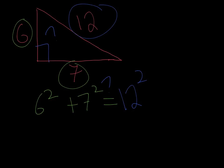If this is true, if it is equal, then it's a right triangle. If it's not, then it's not a right triangle. Simple as that.